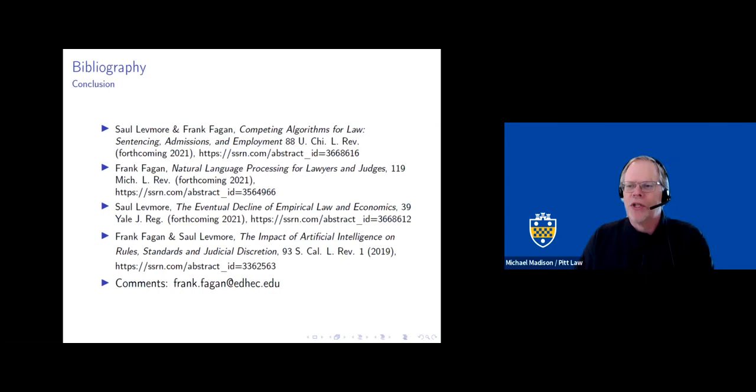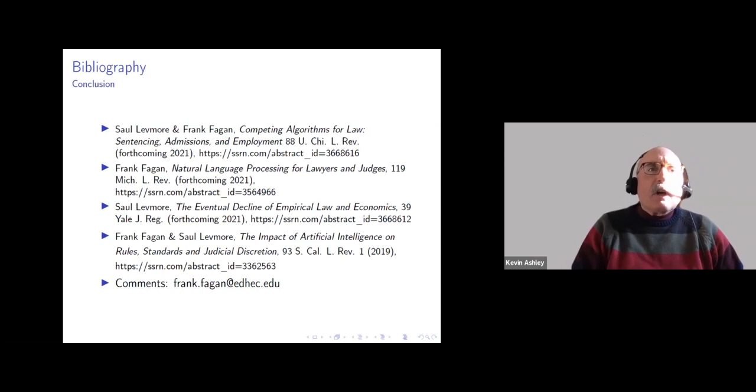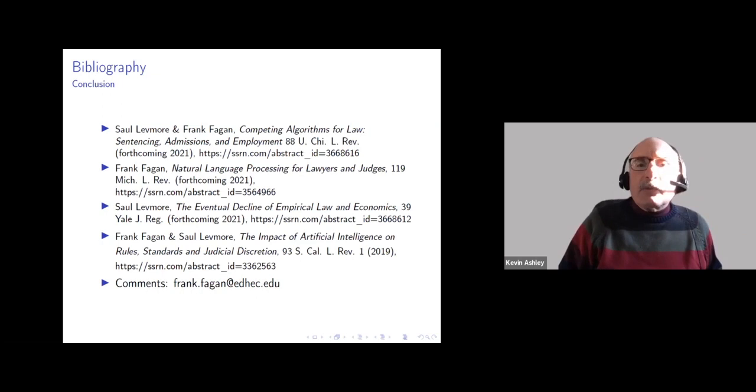I have a question first from Kevin Ashley. Hi, Frank. It's very nice to chat with you again. And I haven't read the paper, but I enjoyed your talk. It does make me think about work that was done back in the 90s. Maybe you weren't born yet, but it was by Uri Schild, who was an Israeli AI and law scientist who used to write about and do work on intelligent computer systems for criminal sentencing. And he came very close to getting the Israeli government to adopt an approach.